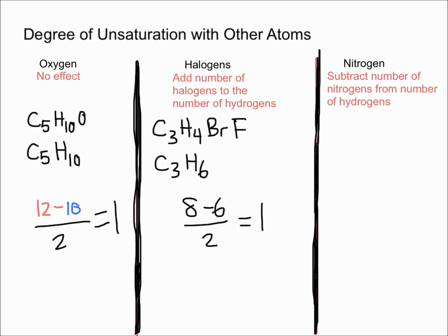If you're not familiar with calculating the degree of unsaturation or the index of hydrogen deficiency, go back a video. I'll post the link right here for you to take a look at. Finally, let's talk about what happens when you have nitrogens. When you have nitrogens in a molecule, you're going to subtract the number of nitrogens from the number of hydrogens. It's essentially the opposite of halogens.